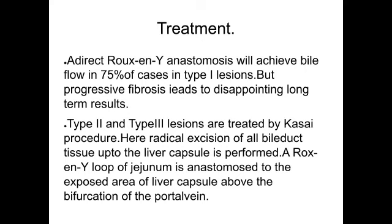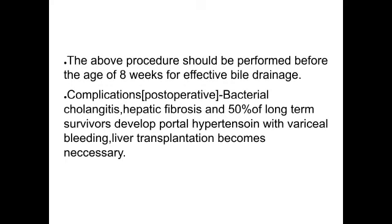Treatment: direct Roux-en-Y anastomosis will achieve bile flow in 75% of cases in type 1 lesions, but progressive fibrosis leads to disappointing long-term results. Types 2 and 3 lesions are treated by the Kasai procedure — radical excision of all bile duct tissue up to the liver capsule, and a Roux-en-Y loop of jejunum is anastomosed to the exposed area of liver capsule above the bifurcation of the portal vein. This should be performed before 8 weeks of age. Post-operative complications include bacterial cholangitis, hepatic fibrosis, and 50% of long-term survivors develop portal hypertension with variceal bleeding, and liver transplantation becomes necessary.